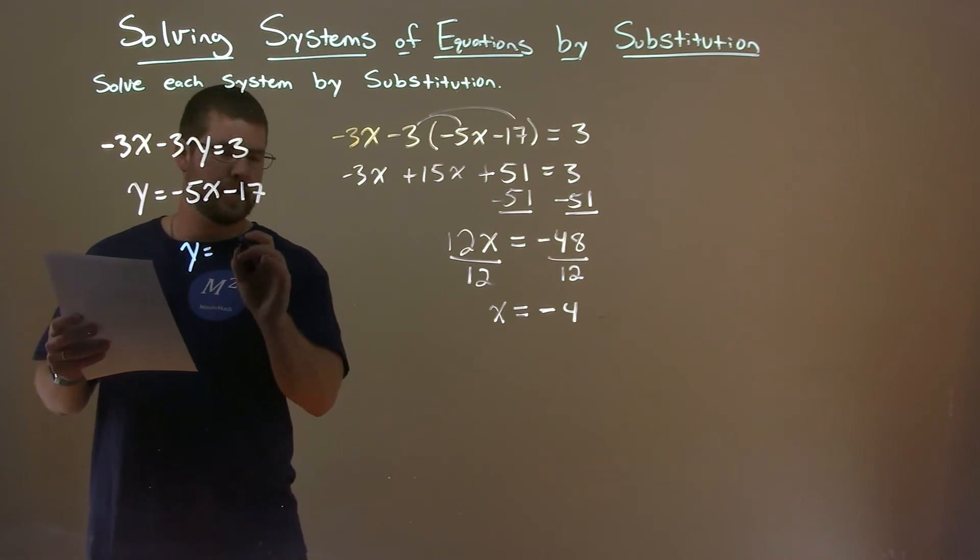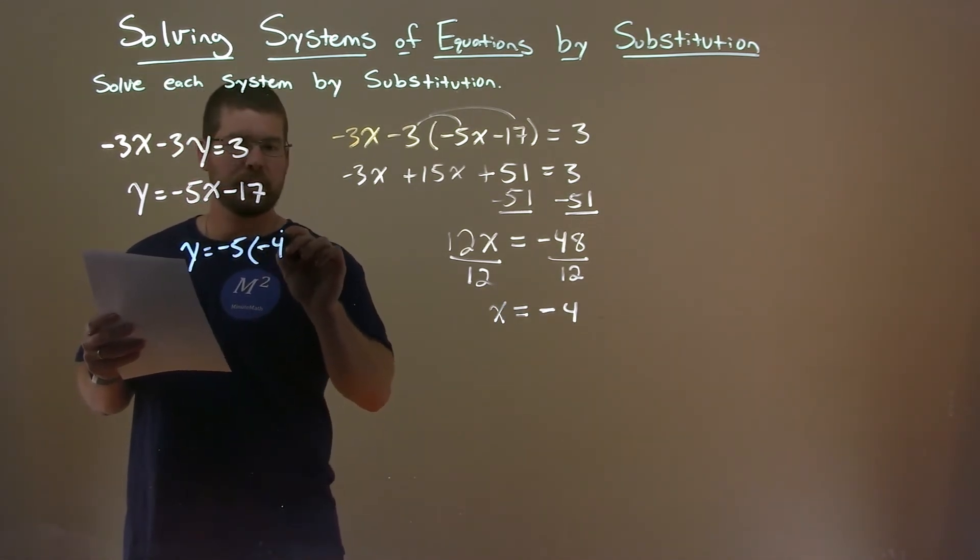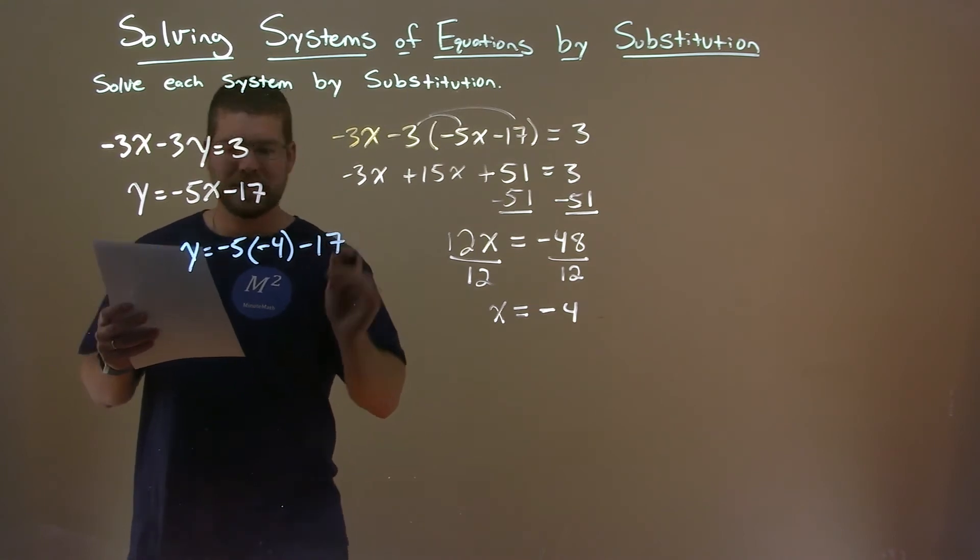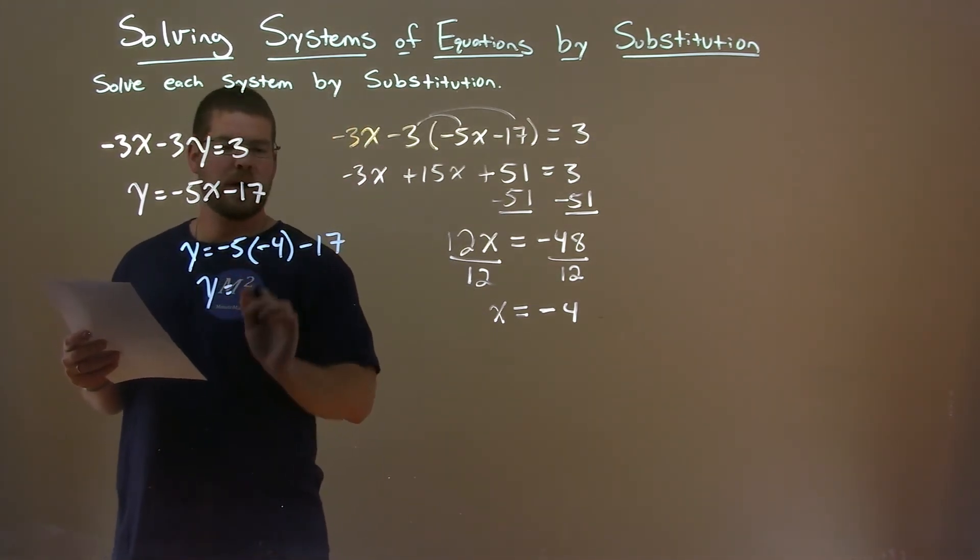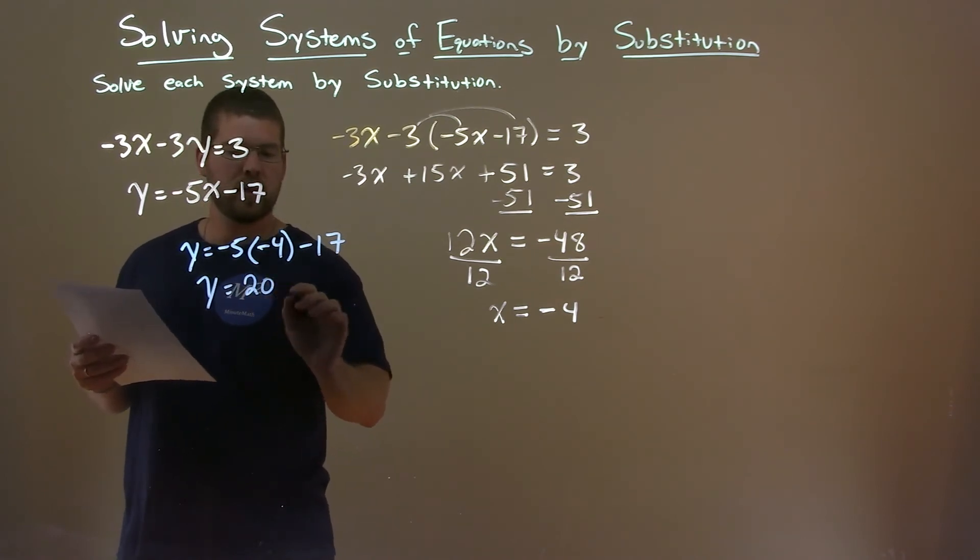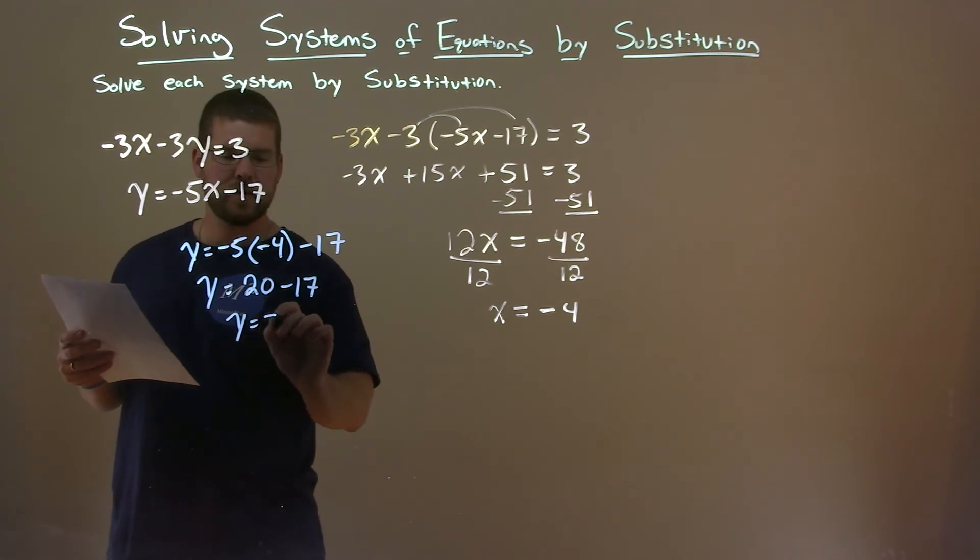So we have y equals, that's much better, minus 5 times x, minus 4 here, minus 17. Okay, well, y equals minus 5 times minus 4 is a positive 20, minus 17. 20 minus 17 is 3.